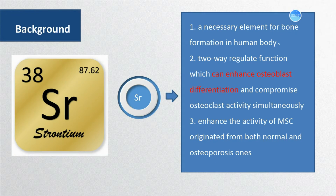Strontium is a necessary element for bone formation in the human body. It has a two-way regulated function which can enhance osteoblast differentiation and compromise osteoclast activity simultaneously. It also can enhance activity of MSCs originated from both normal and osteoporosis ones.